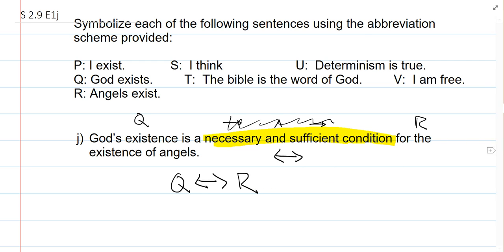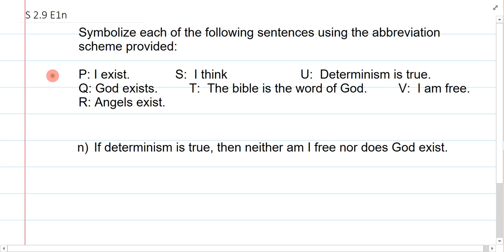The last one we're going to do is also pretty straightforward, but I suppose there's a slight complication here. This is the first one we have where there's more than one connective. So, the first thing I should realize for if determinism is true, then, neither am I free, nor does God exist. I have the if-then here. OK. So, that's quite important. I also realize that I have a comma, which indicates the main break.